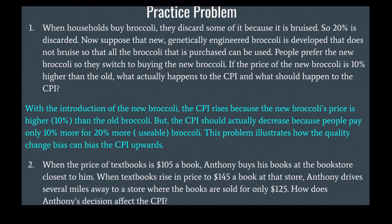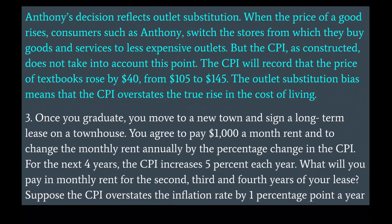Second, when the price of a textbook is $105, Anthony buys his books at the bookstore closest to him. When textbooks rise in price to $145 at that store, Anthony drives several miles away to a store where books are sold for only $125. Anthony's decision reflects outlet substitution — when the price of a good rises, consumers switch to less expensive outlets. But the CPI does not take this into account; it records that the price of textbooks rose by $40 from $105 to $145. The outlet substitution bias means the CPI overstates the true rise in the cost of living.